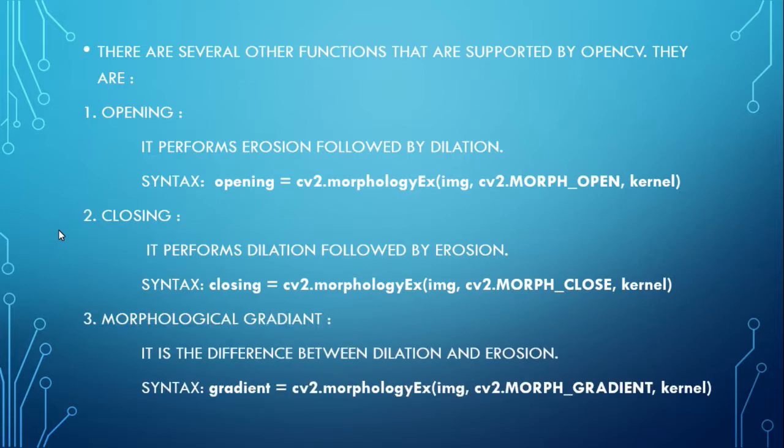Morphological gradient: It is the difference between dilation and erosion. So the dilation is performed first and then erosion, and the resulting difference is the morphological gradient. Syntax is: gradient = cv2.morphologyEx(img, cv2.MORPH_GRADIENT, kernel).